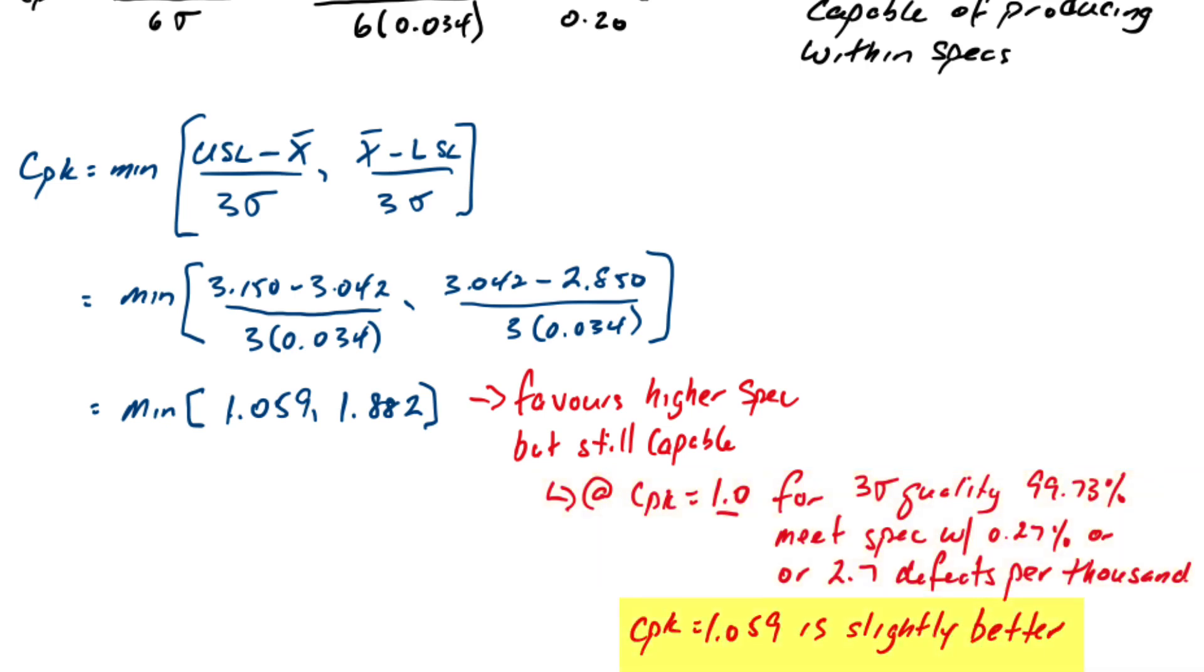So a CPK of 1.059 is slightly better than that and fairly centered even though it slightly favors the upper specification meaning that some bottles might be a little more than the average.